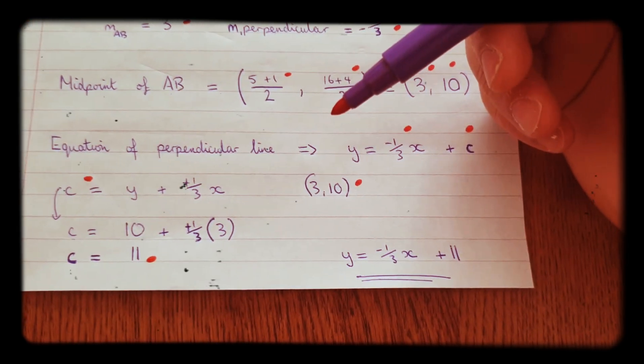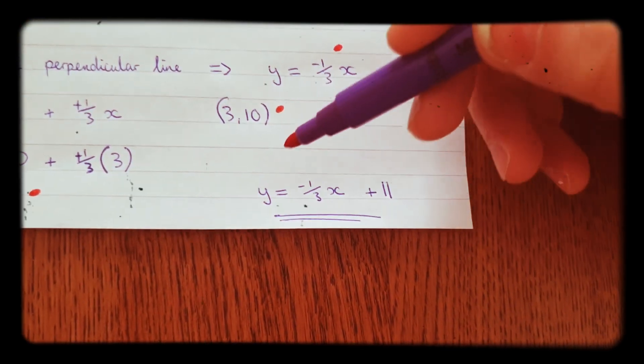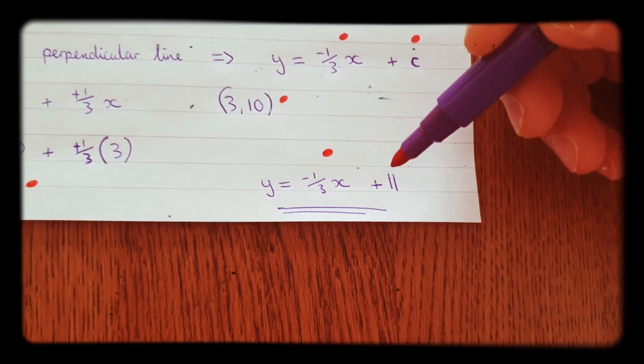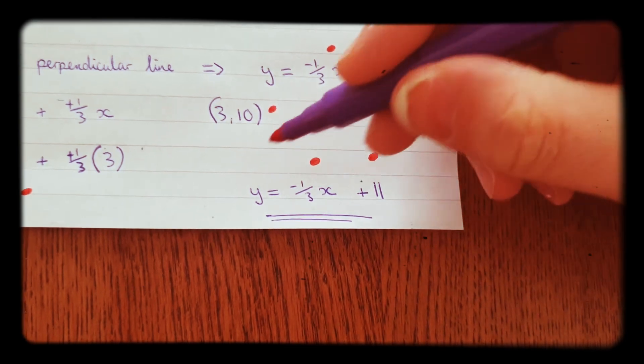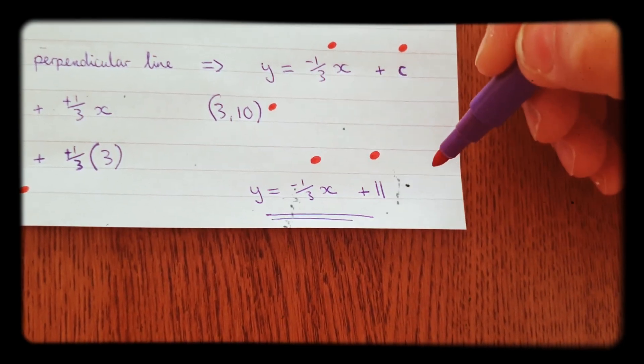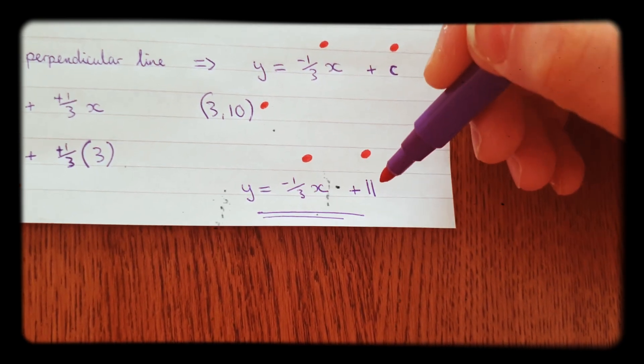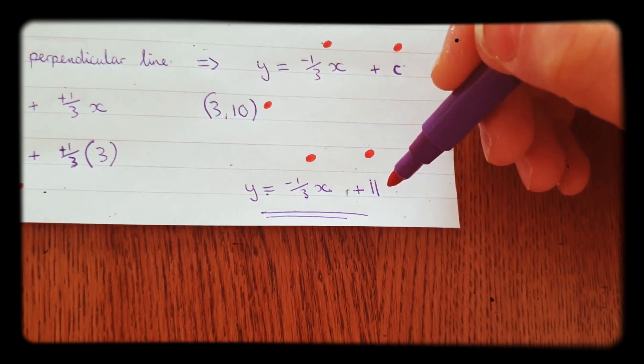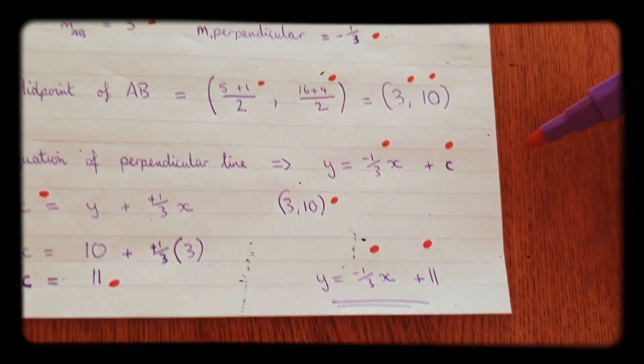Therefore, we now have the information for the equation of the line. It's Y equals minus 1 third X plus 11, because it's Y equals MX plus C. The M was minus 1 third, and 11 was the Y intercept. And that's how you do that. Any questions, just leave them down below.